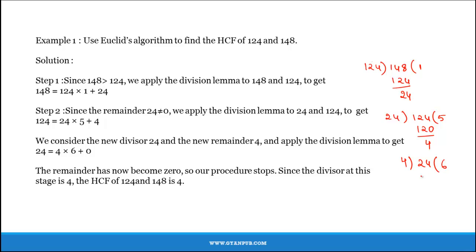4 goes in 24 six times and the remainder is 0. Therefore, 24 is written as 4 times 6 plus 0.